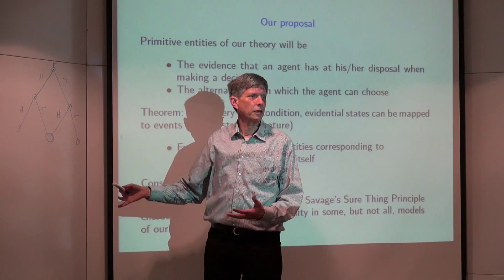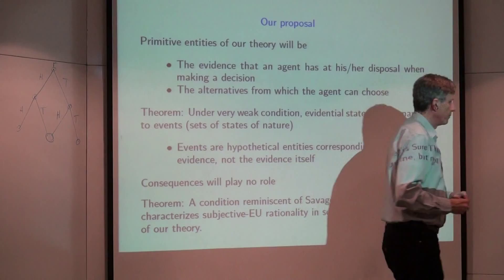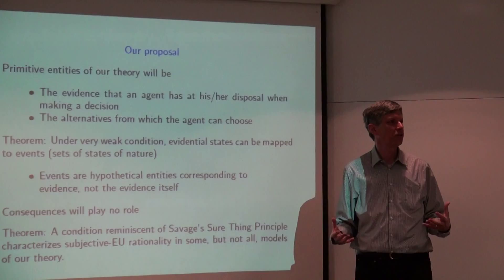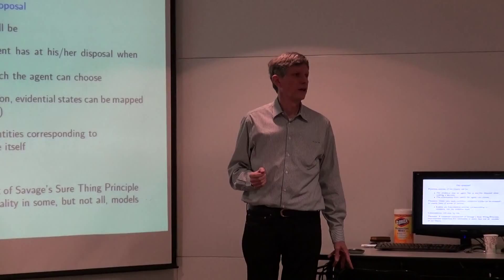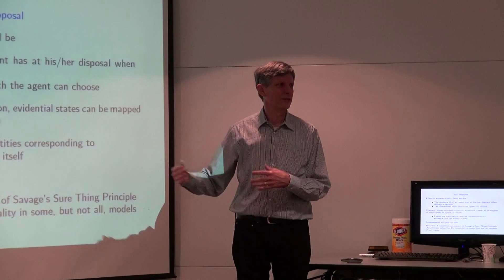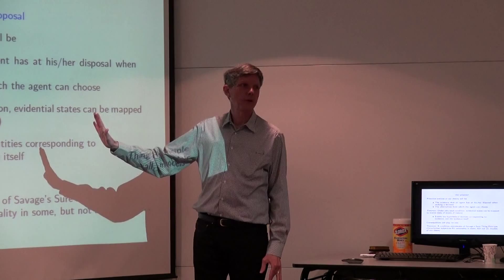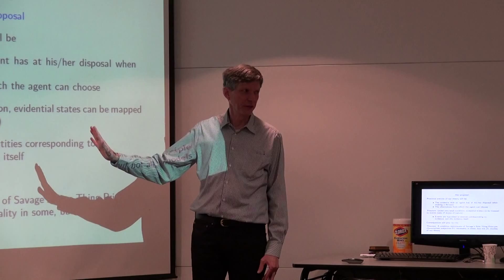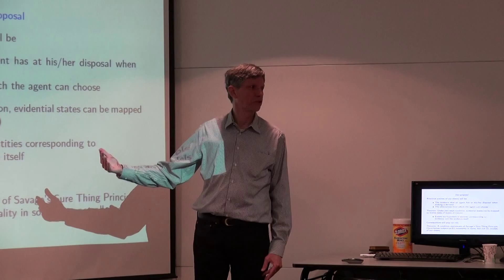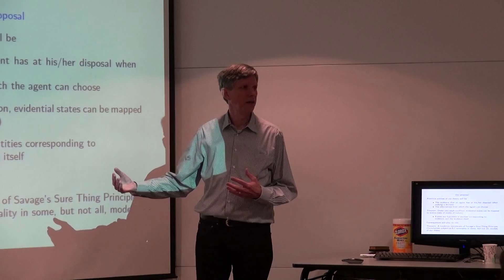A huge amount of Bayesian decision theory assumes the evidential structure is a tree — that's where all the business about filtrations comes in. The first point I'd like to make is that when you start from the question of what structural axioms to put on evidence, rather than starting from the assumption that evidence is a tree, you don't necessarily get back to a tree.